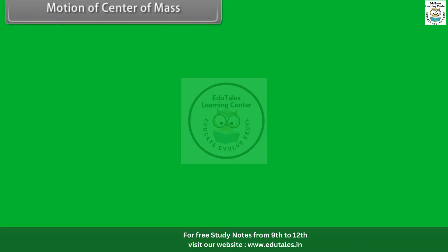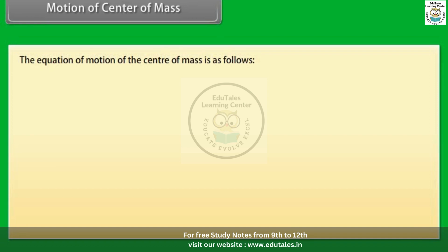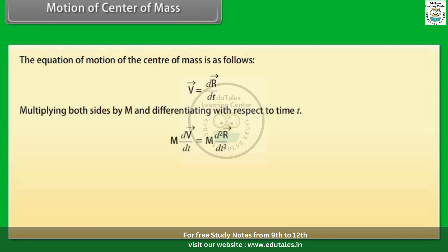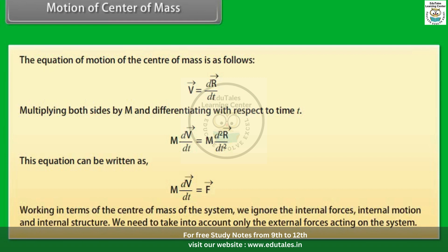The equation of motion of the center of mass is: V⃗ = dR⃗/dt. Multiplying both sides by M and differentiating with respect to time T, we get M·dV⃗/dt = M·d²R⃗/dt², which can be written as M·dV⃗/dt = F⃗. Working in terms of the center of mass of the system, we ignore internal forces, internal motion, and internal structure, and take into account only the external forces acting on the system.